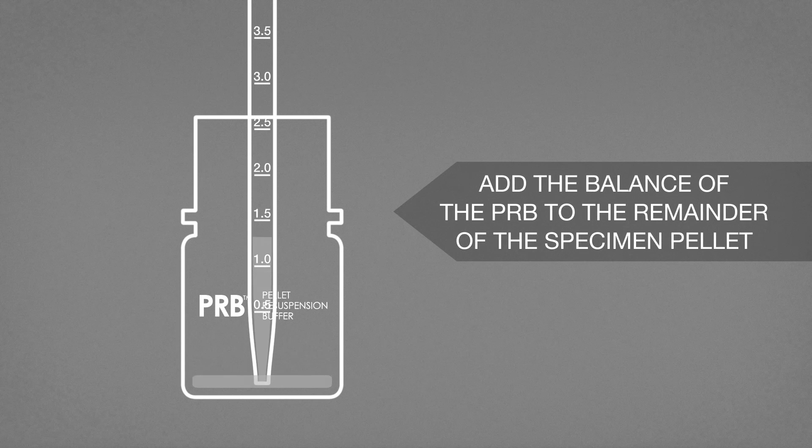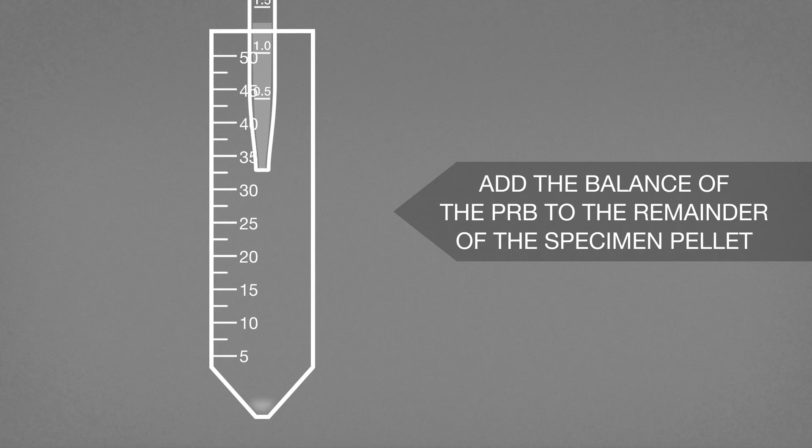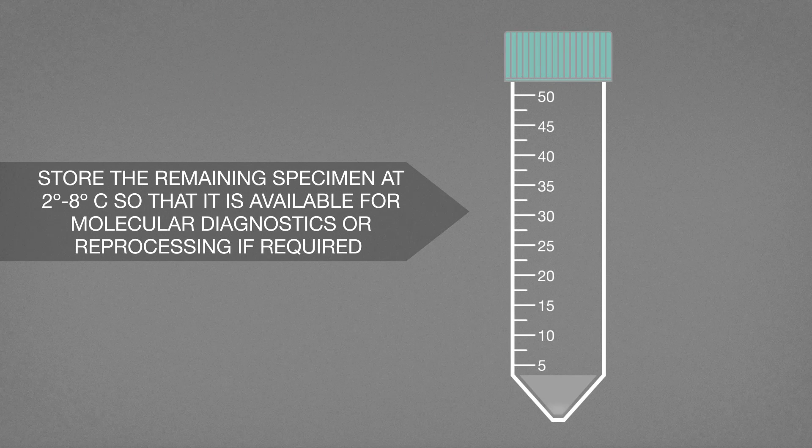Add the balance of the PRB to the remainder of the specimen pellet. Cap the specimen tube. Store the remaining specimen in a smaller tube if necessary at 2 to 8 degrees Celsius so that it is available for molecular diagnostics or reprocessing if required.